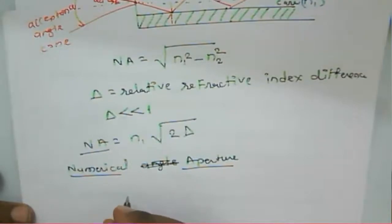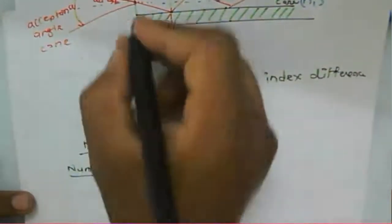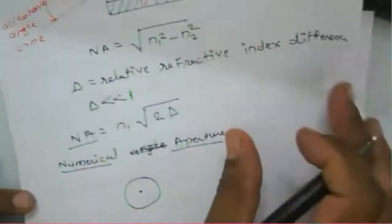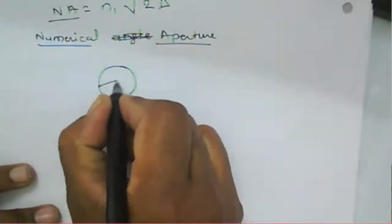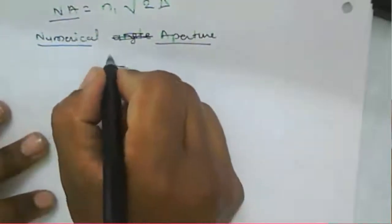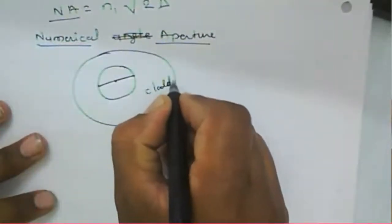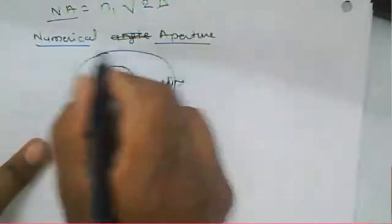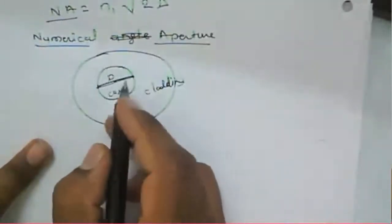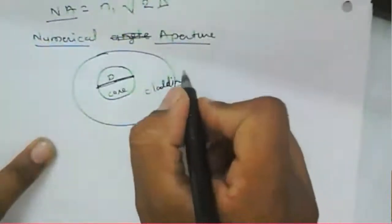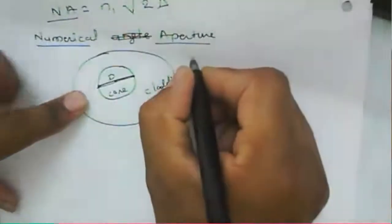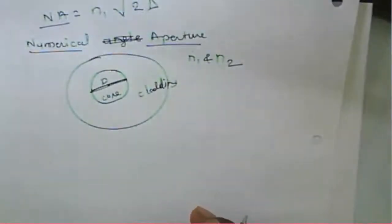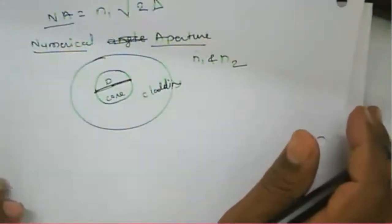This numerical aperture is independent of the diameter of the fiber. The fiber has a core with a certain diameter and a cladding around it, but the numerical aperture does not depend upon the diameter of the core. It is totally dependent upon the refractive indices of the fiber core and cladding — n1 and n2 — and is not dependent upon the structure of the fiber.